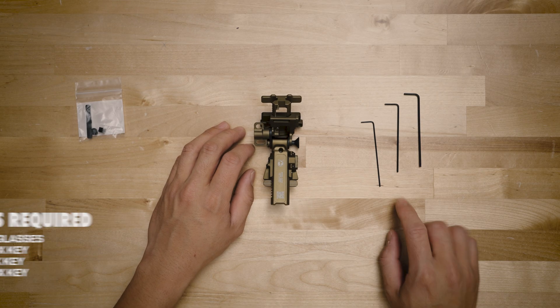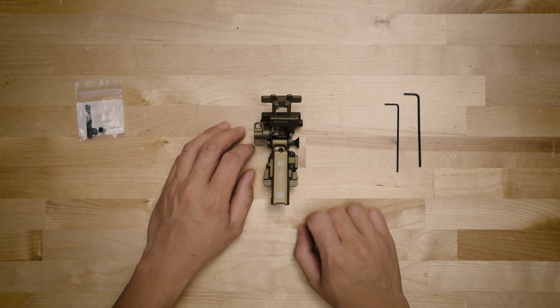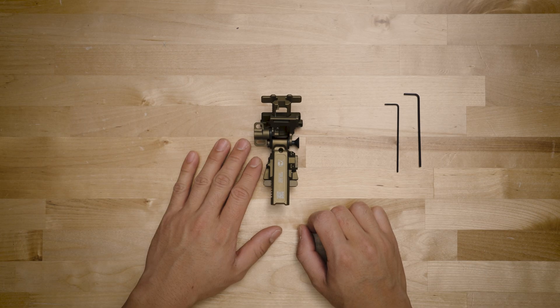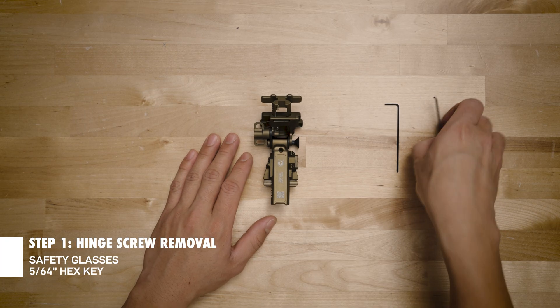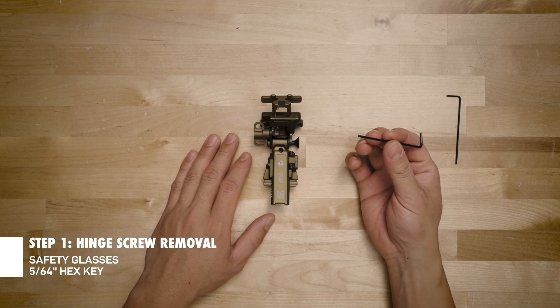So to turn this into an FTO mount, we don't need the tinier allen key, so we're going to move that out of the way. We're also going to move this out of the way for now. And we're going to start off with our 5/64th allen key over here.